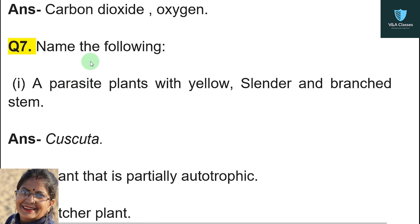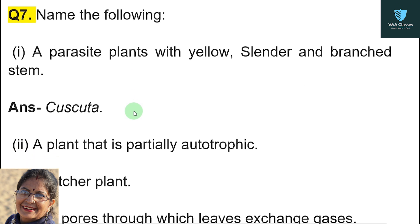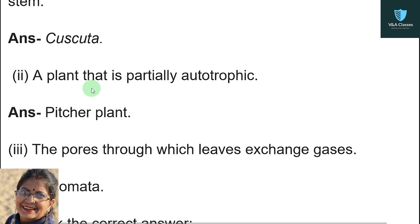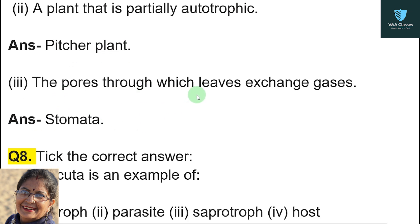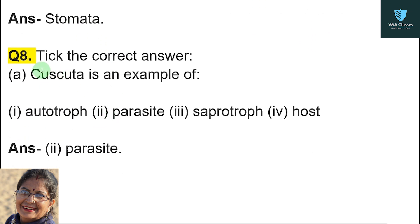Question number seven — name the following: a parasitic plant with yellow, cylindrical, and branched stem. Answer: Cuscuta. A plant that is partially autotrophic. Answer: pitcher plant. The pores through which leaves exchange gases. Answer: stomata.